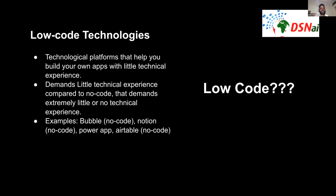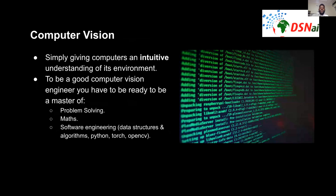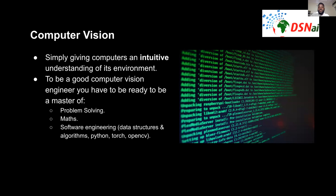Examples of general low-code technologies include Bubble, Notion, Power Apps, and Zapier. But let me focus my attention on low-code technologies specifically with respect to computer vision.